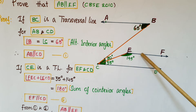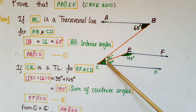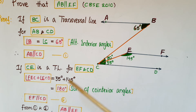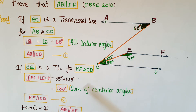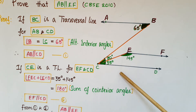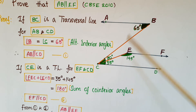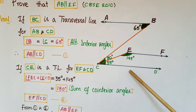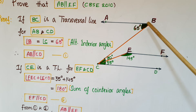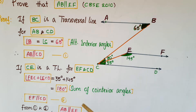Next, taking lines EF and CD, these two angles are co-interior angles. Adding them: 35 + 145 = 180 degrees. Since the sum of co-interior angles is 180 degrees, EF is parallel to CD. Since AB is parallel to CD and EF is parallel to CD, we can conclude that AB is parallel to EF.